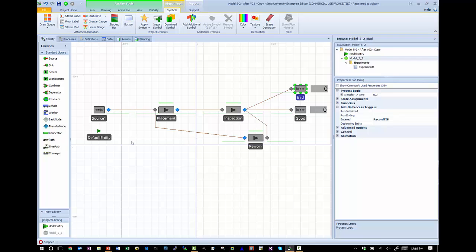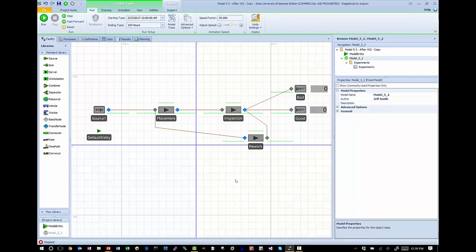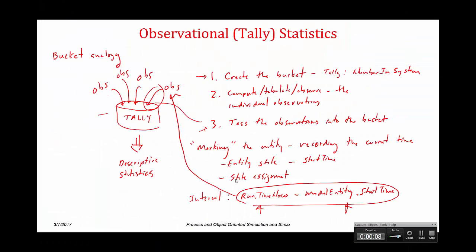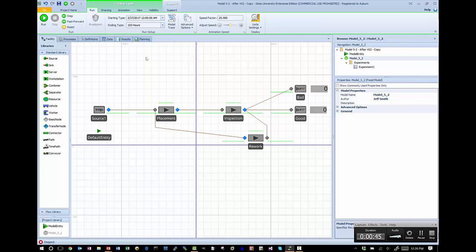If we wanted to track how many times each entity goes through the placement process, we would have to create a user-specified statistic, because Simio has no way to know that's something we're interested in. This is clearly an observational statistic — for each board, we create an observation of how many times it went through placement, toss those into our tally bucket, and Simio reports on those values. We're going to follow the same three-step process: create the bucket, compute the observations, and toss them into the bucket.